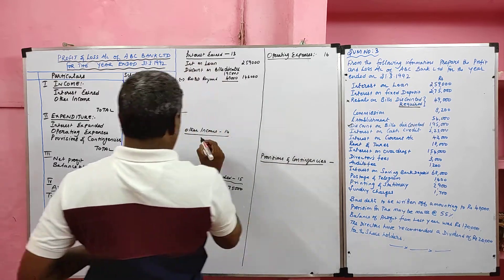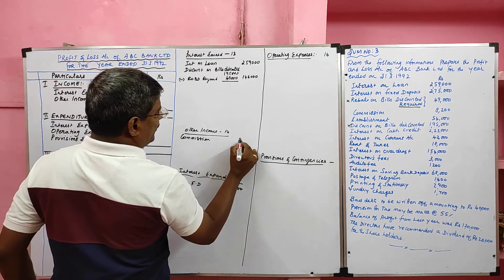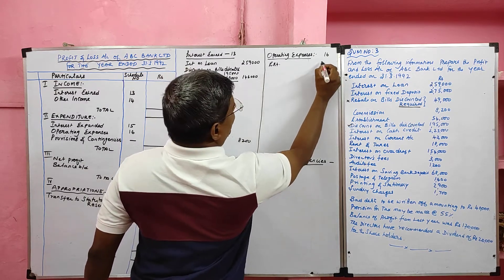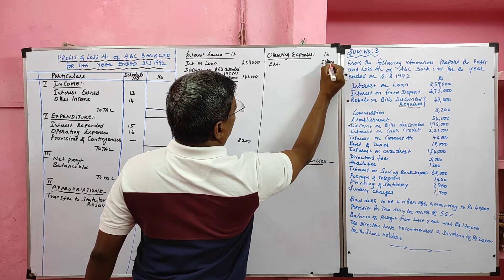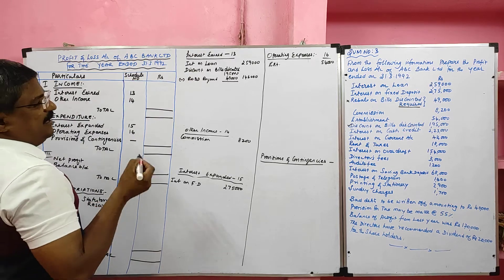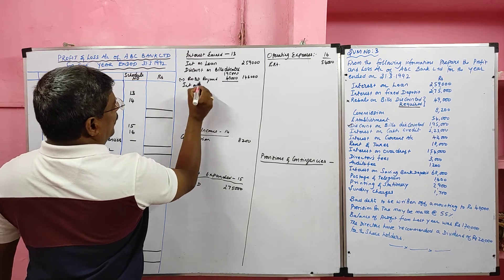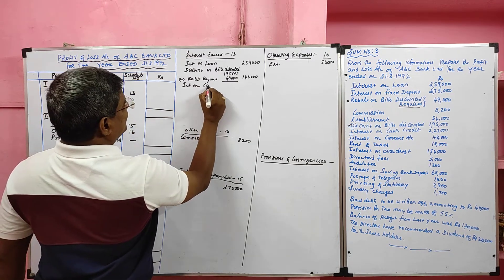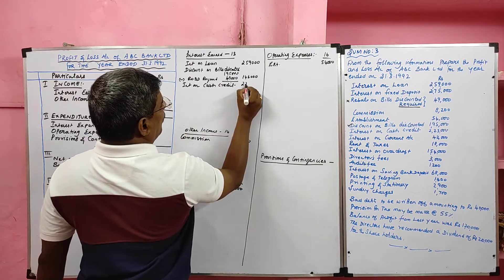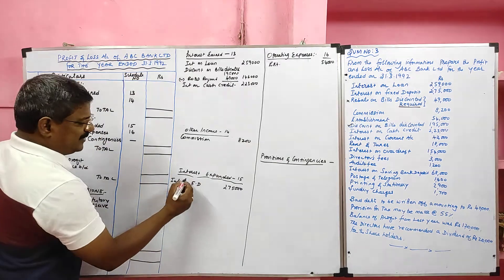Commission received — if commission is given, we assume it as commission received, recorded in other income at rupees 8,200. Establishment is an operating expense at rupees 54,000. Discount on bill discounted has already been used in Schedule 13. Interest on cash credit is included in interest earned with a value of rupees 2,23,000.